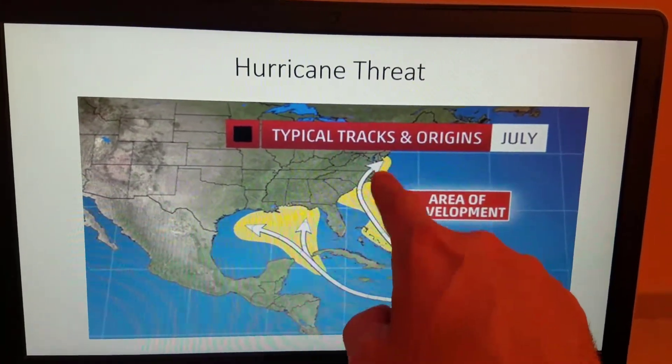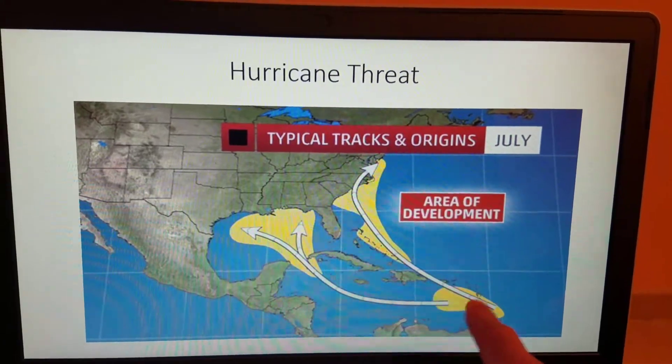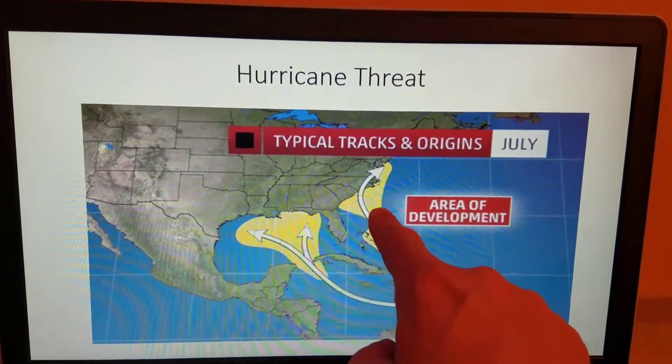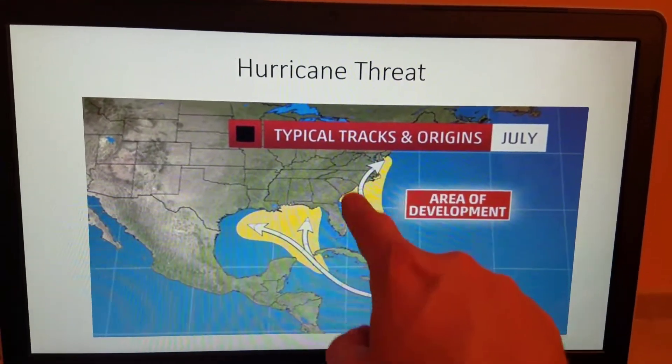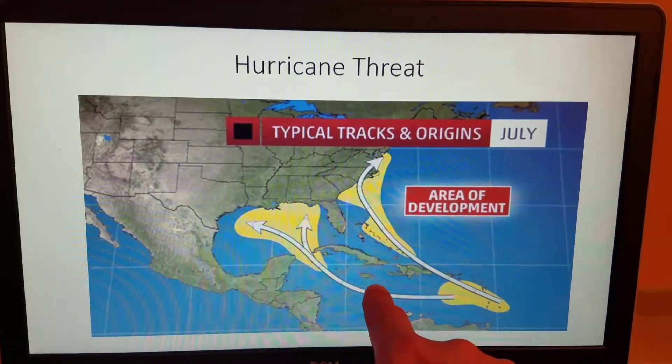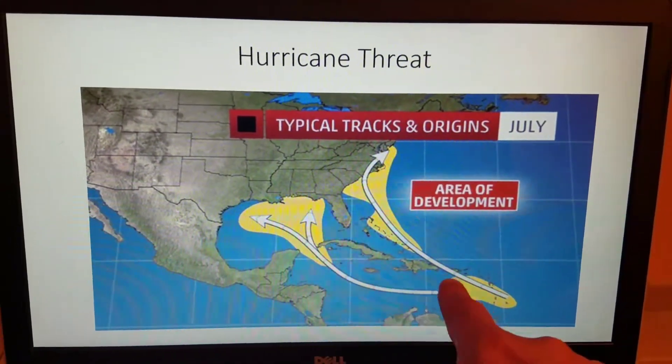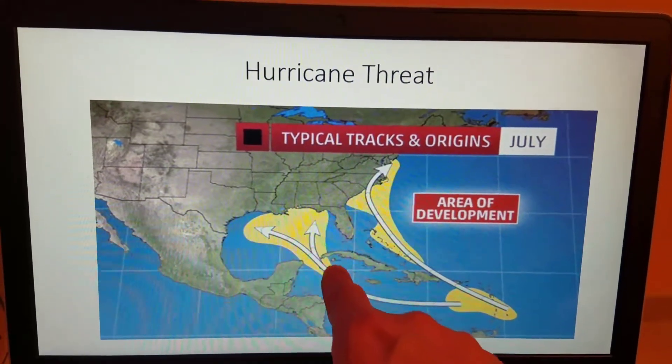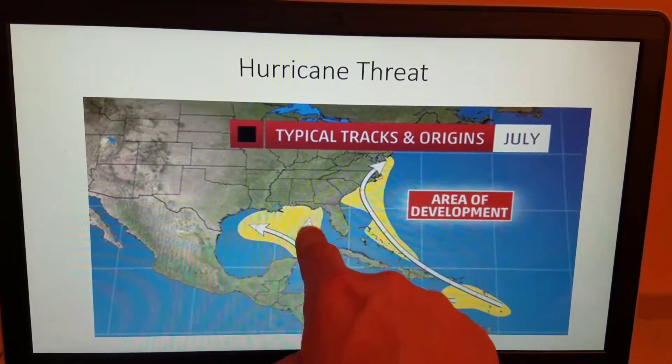Here are the tracks indicated by the arrows. Anything that forms in the Caribbean typically will move into the western Atlantic and could have an impact on southeast Virginia. The systems that form further south, south of Hispaniola, south of Puerto Rico, they tend to go generally westerly and then west and then northwesterly turning into the Gulf of Mexico.